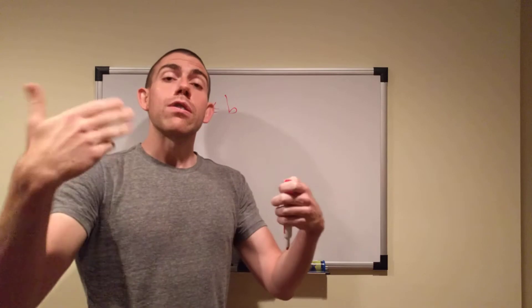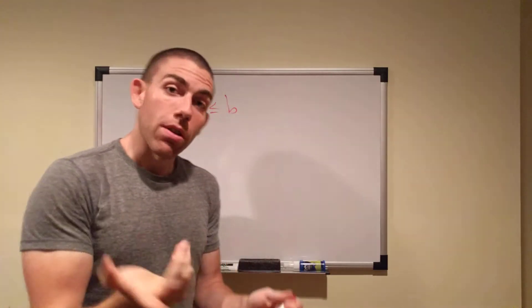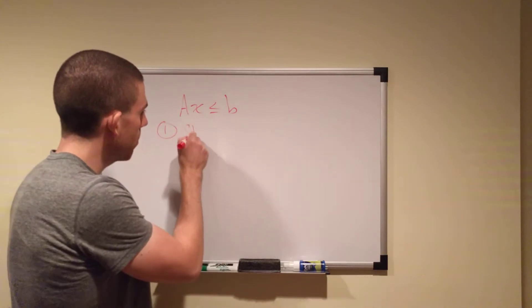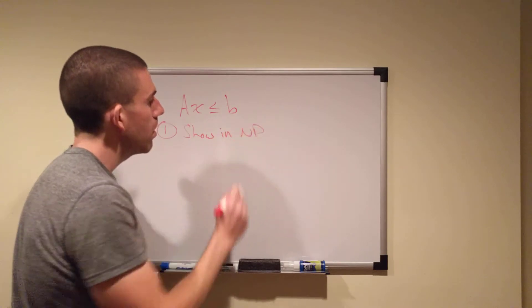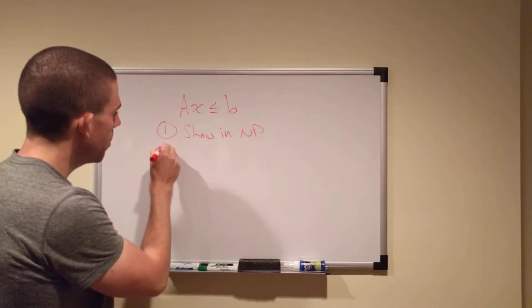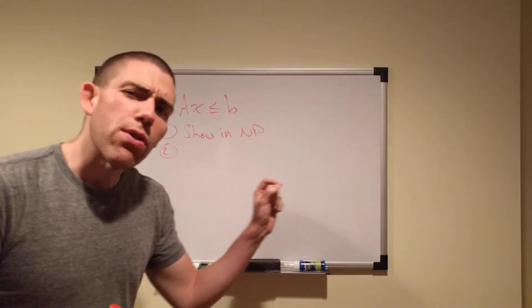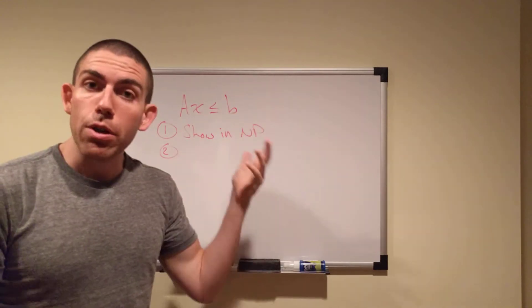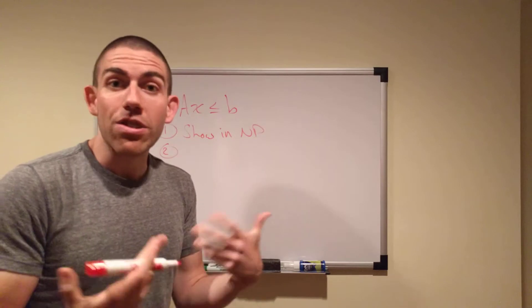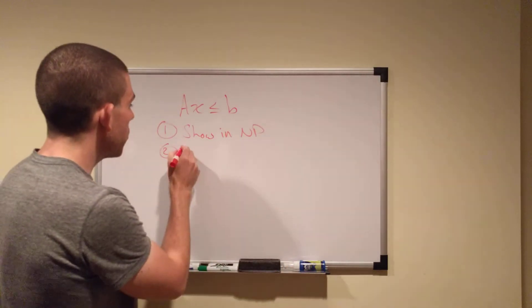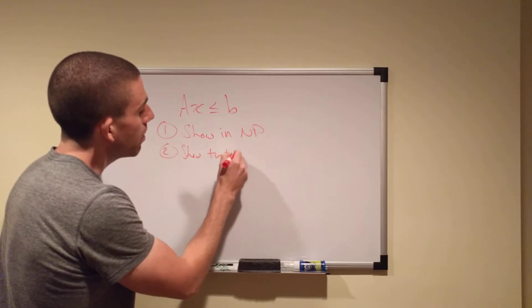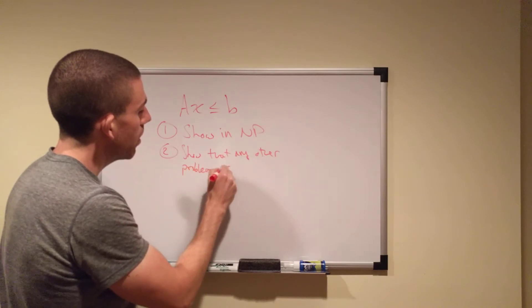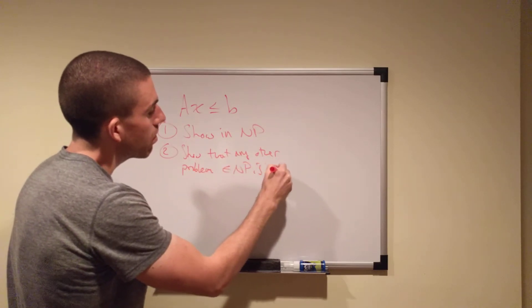So how do we do that? What does it mean for a problem to be NP-complete? Well, there are two requirements. One, you have to show that it's in NP. Two, you have to show that every other problem in NP can be reduced to the problem in question. So you have to show that it is essentially the same problem as every other problem. Show that any other problem in NP is reducible.